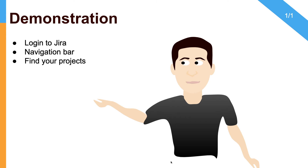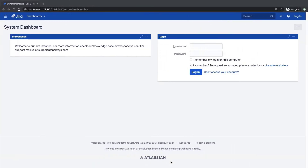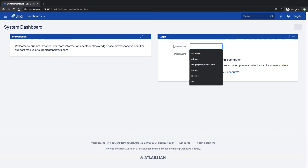We will briefly discuss how to find your projects and how to find the issues that are relevant to you. In Jira, issues are basically different activities — although the name 'issue' itself is a bit misleading, an issue is nothing but any kind of activity. We will also take a look at the user profile and preferences. Let us now take a look at the Jira interface and discuss what you can do when you log in.